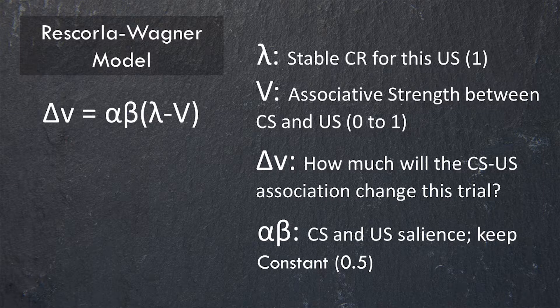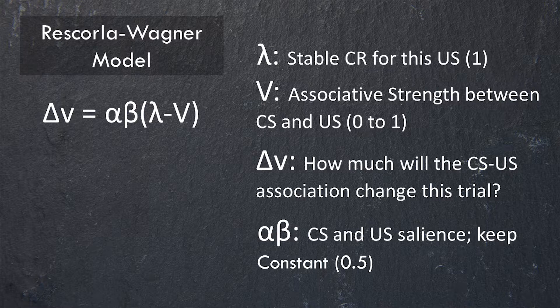Next, let's talk about V, which symbolizes the associative strength — how much is learned between the CS and US. If you've never learned anything at all, V is zero; there's no association between the CS and US. If you know the CS and US are connected with a high degree of certainty, there's nothing left to learn — we can call this 100% learning by giving it a value of one. So V, the possible strength of the association between the CS and US, ranges between zero and lambda — in our case, zero and one.